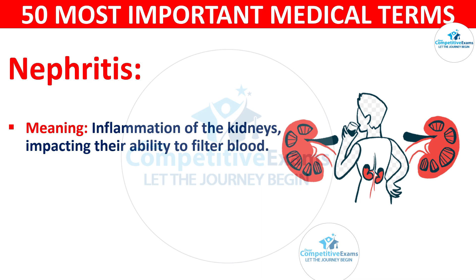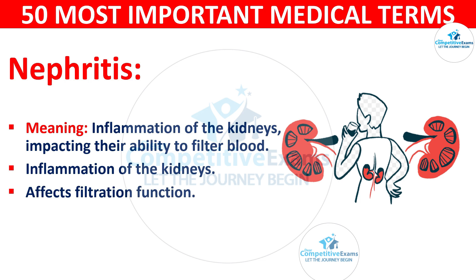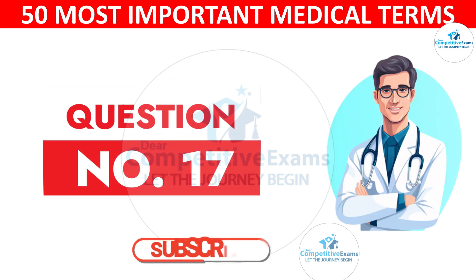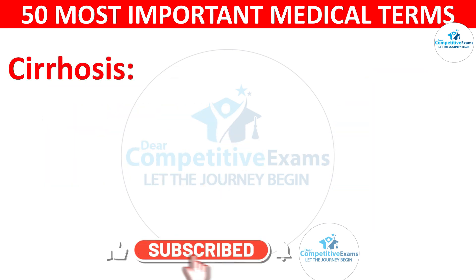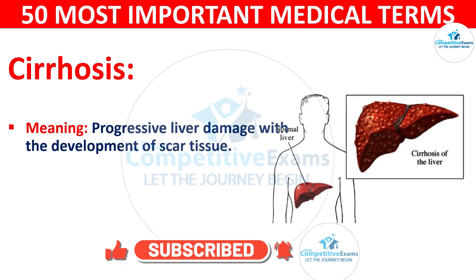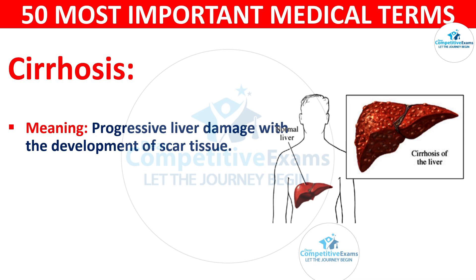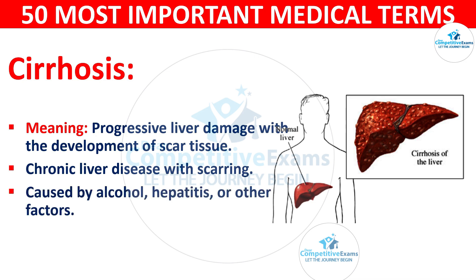Nephritis: meaning inflammation of the kidneys impacting their ability to filter blood. It is an inflammation of the kidneys that affects their filtration function. Cirrhosis: meaning progressive liver damage with the development of scar tissue. It is a chronic liver disease with scarring, caused by alcohol, hepatitis, or other factors.